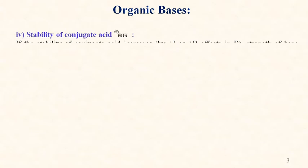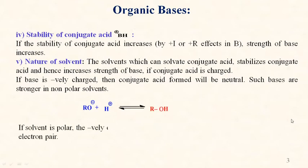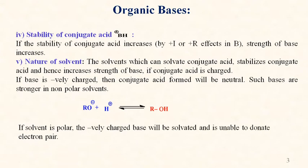For the stability of conjugate acid BH+: if stability of the conjugate acid increases by electron-donating inductive or electron-donating resonance effect in B, the strength of the base increases. Regarding nature of solvent: the solvent which can solvate the conjugate acid stabilizes it and hence increases the strength of the base.